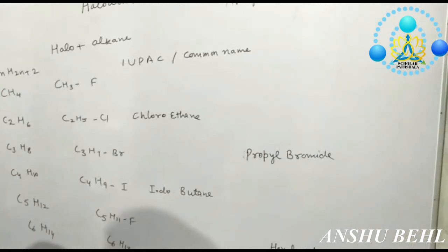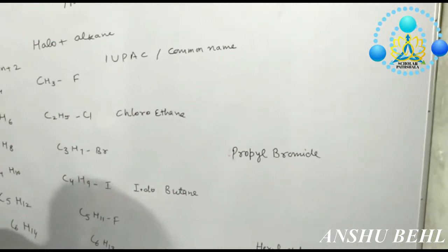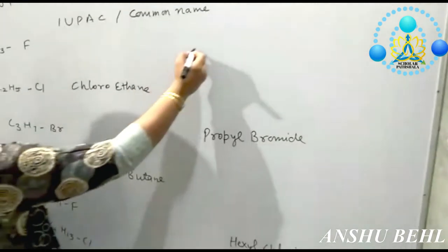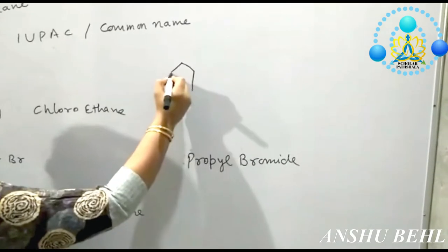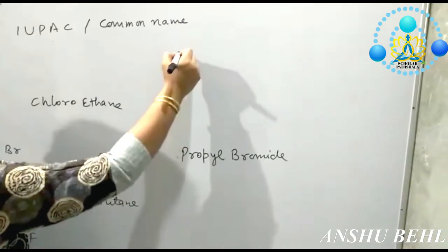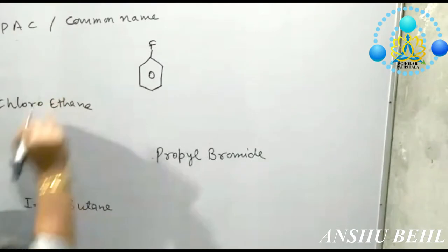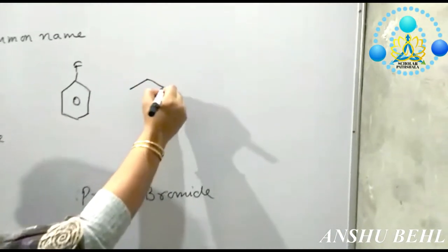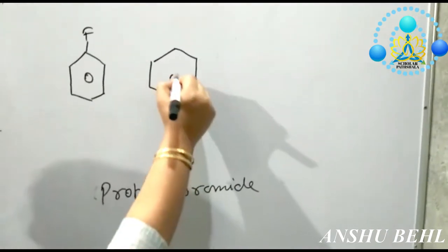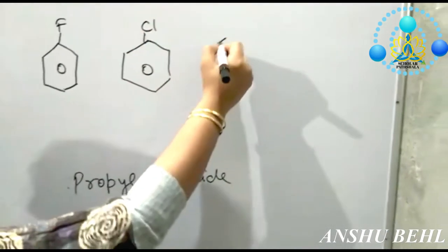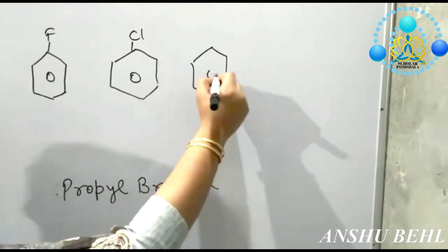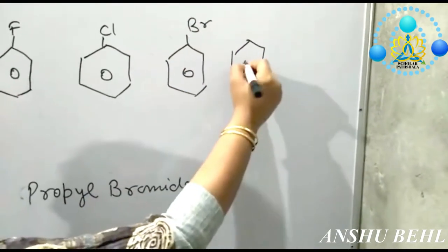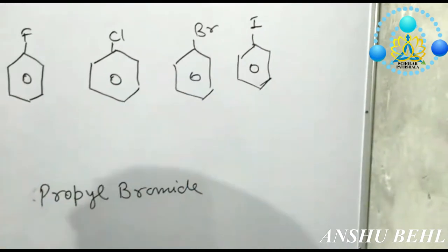After that comes haloarenes — how to write names of compounds having a benzene ring in them. First draw the benzene ring, then write it with a halogen. If chlorine is there: chlorobenzene. If bromine is there: bromobenzene. If iodine is there: iodobenzene.